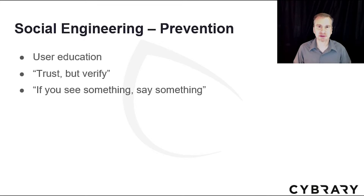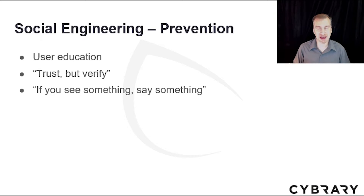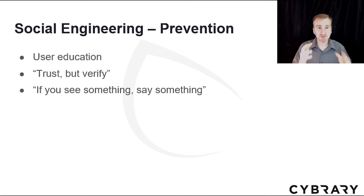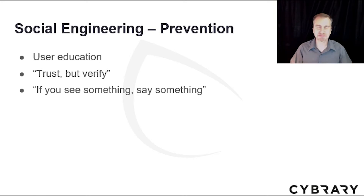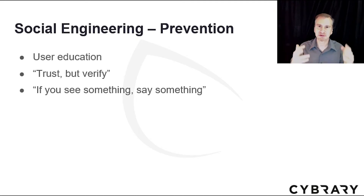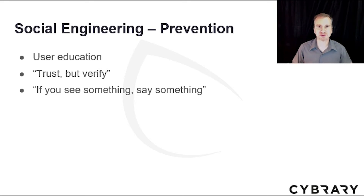How do we stop social engineering — the art of human hacking? First is user education. That security awareness training some people like to ignore could actually save them a lot of headaches. We need to continually educate our population about these attacks. Trust but verify — a quote from Ronald Reagan. When you see something, verify it; don't just trust it. If it sounds too good to be true, it probably is. Lastly, if you see something, say something. If something doesn't seem right, ask somebody else. If you think you got an email that might be phishing from your bank, call them up — don't reply to that email. These are all very simple ways to prevent and reduce the effects of social engineering.